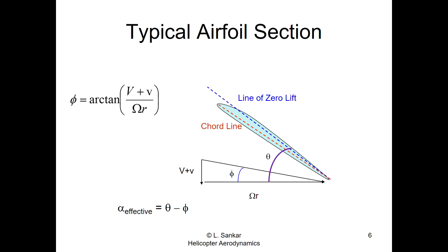The chord line is shown as a dotted line. For a cambered airfoil, there is a particular wind direction called the line of zero lift — if the wind blows along that line, the airfoil produces exactly zero lift. Perpendicular to the actuator disc, we have the climb velocity V plus the induced velocity v from our actuator disk model.